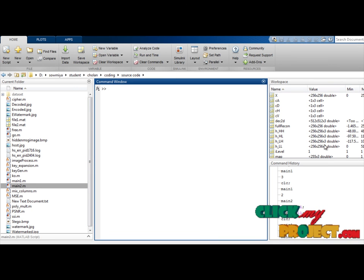Finally, we display our values in workspace and command window for main one and main two.